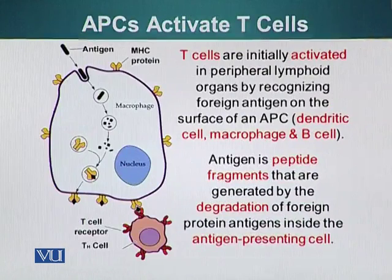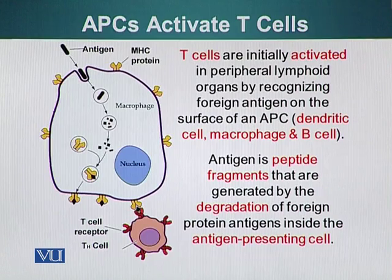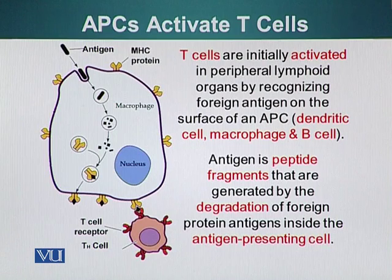T-cells are initially activated in peripheral lymphoid organs by recognizing foreign antigen on the surface of APCs — antigen-presenting cells. These cells include dendritic cells, macrophages, and B-cells. B-cells can also present antigens to T-cells directly.